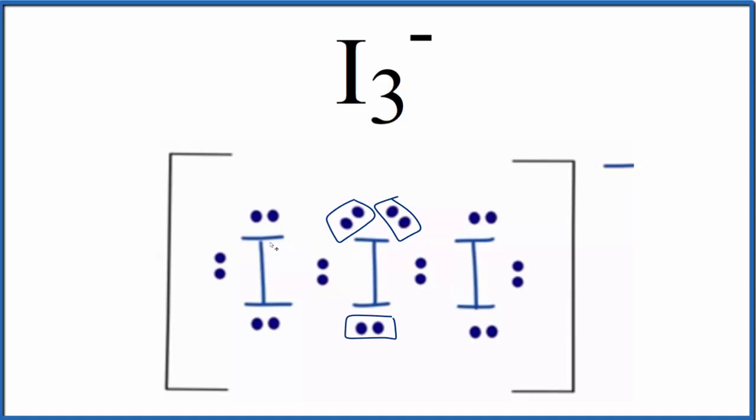You could also count the lone pairs here on the iodines on the outside. We have one, two, three on each of those, but usually we're only interested in that central iodine atom.